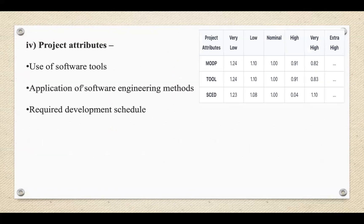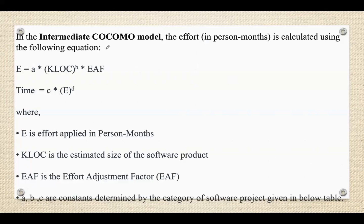The last set of attributes are project attributes, including: use of software tools such as CASE tools; application of software engineering methods; and required development schedule — the urgency of the project timeline. In the Intermediate COCOMO model, effort in person-months is calculated using the same base formula as Basic COCOMO, multiplied by the Effort Adjustment Factor (EAF): Effort = A × KLOC^B × EAF. The development time formula remains the same: Time = C × Effort^D.